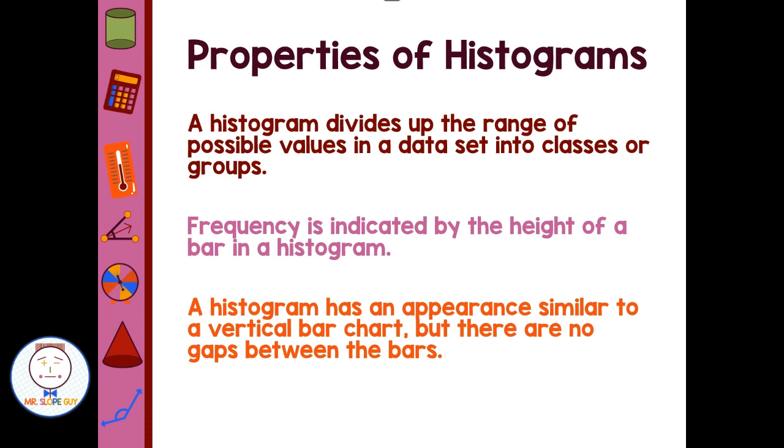A histogram divides up the range of possible values in a data set into classes or groups. Frequency is indicated by the height of the bar in a histogram. A histogram has an appearance similar to a vertical bar chart, but there are no gaps between the bars.